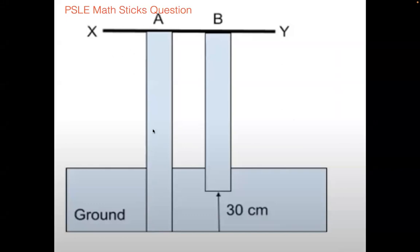It says that two rods A and B are dropped and they all penetrate into the ground. So the length of A, which I labeled above ground, is the same as the length of B above ground. So this equals to this.